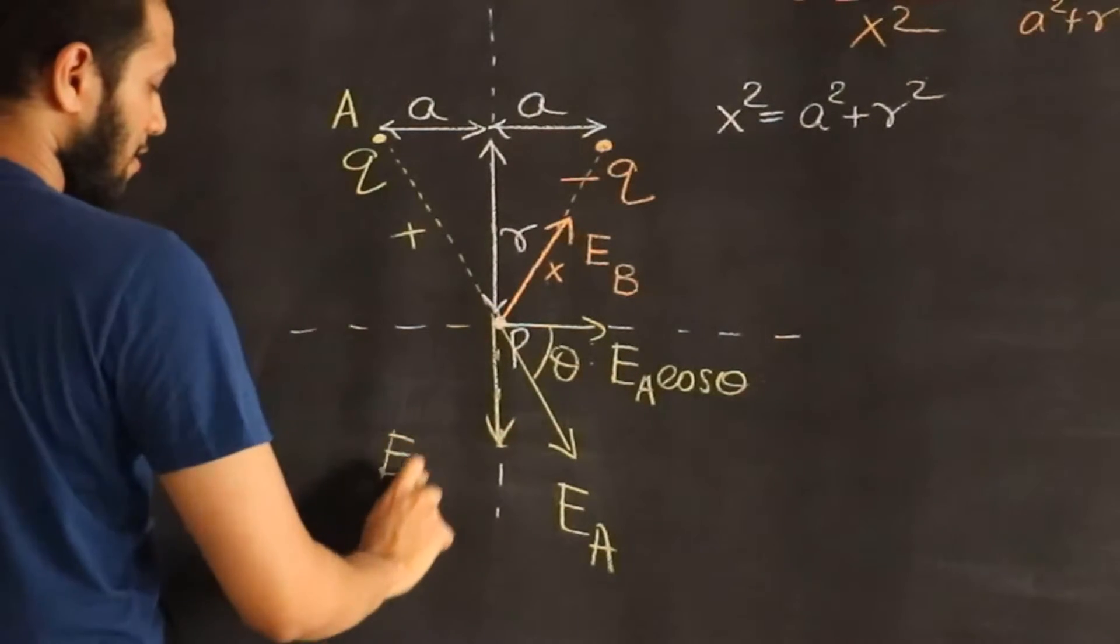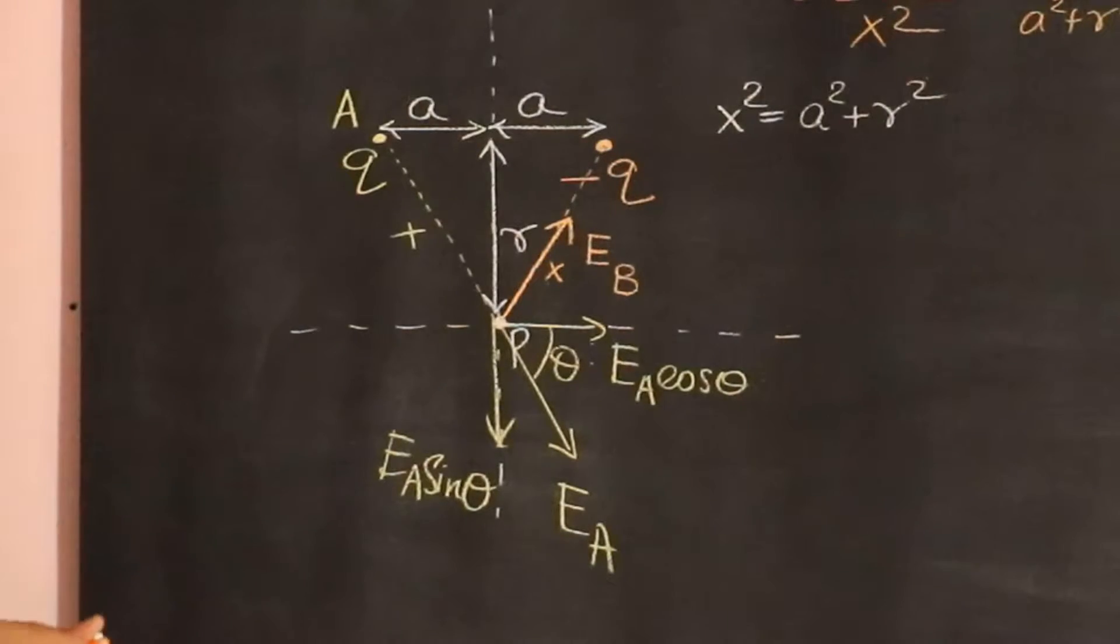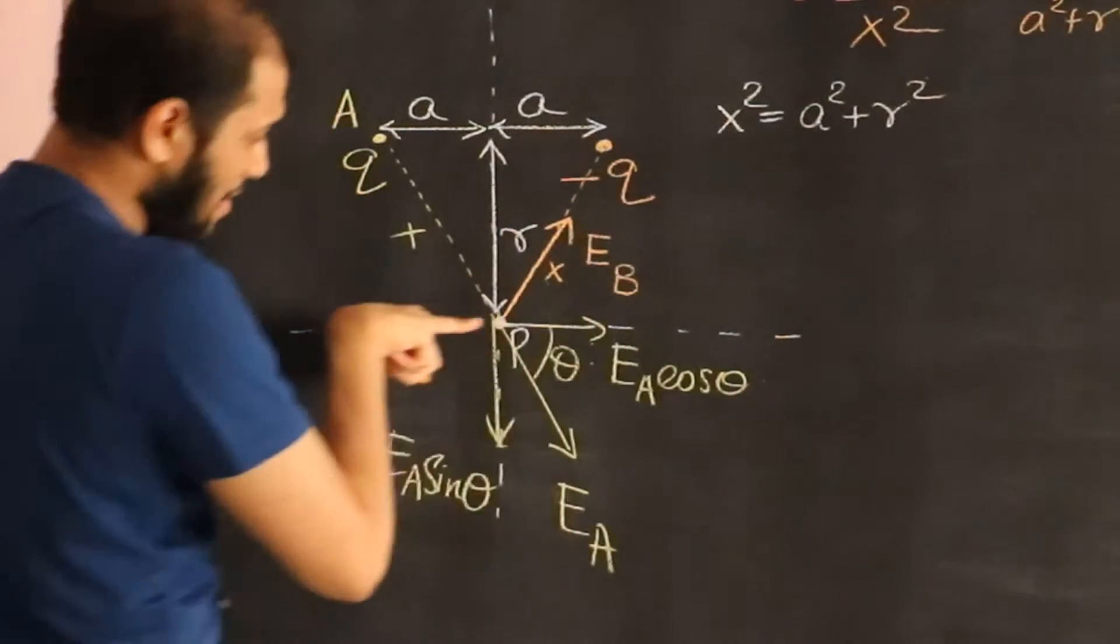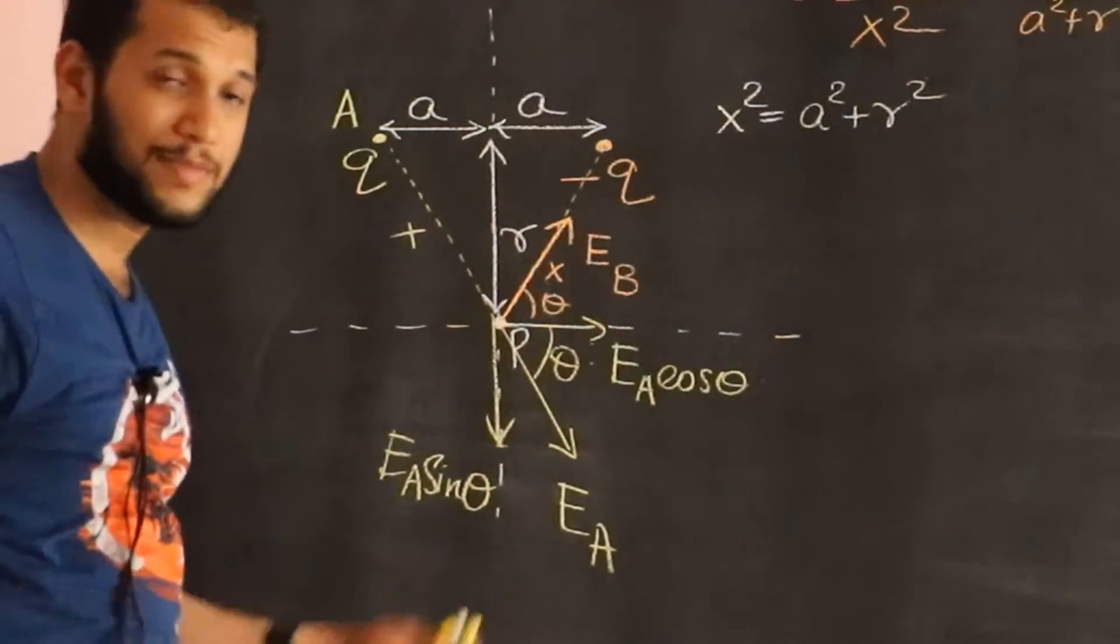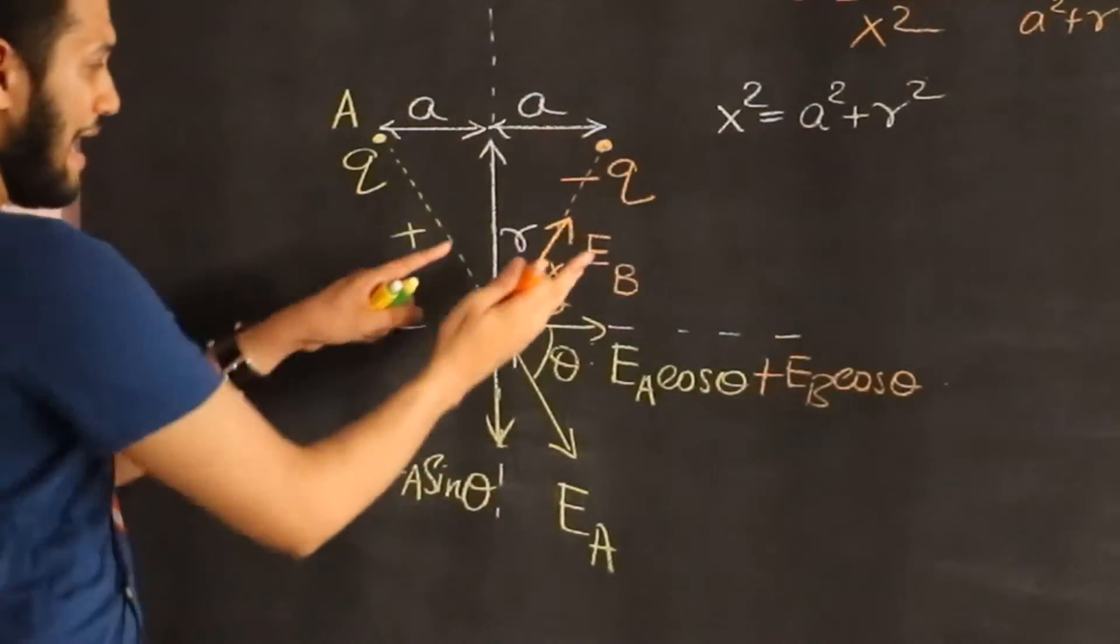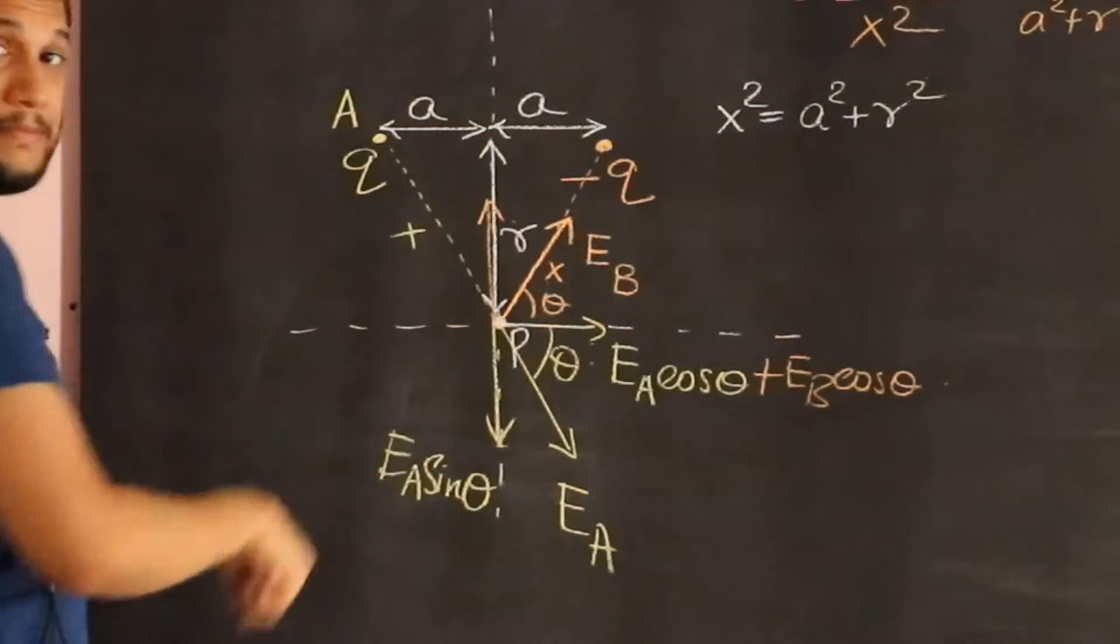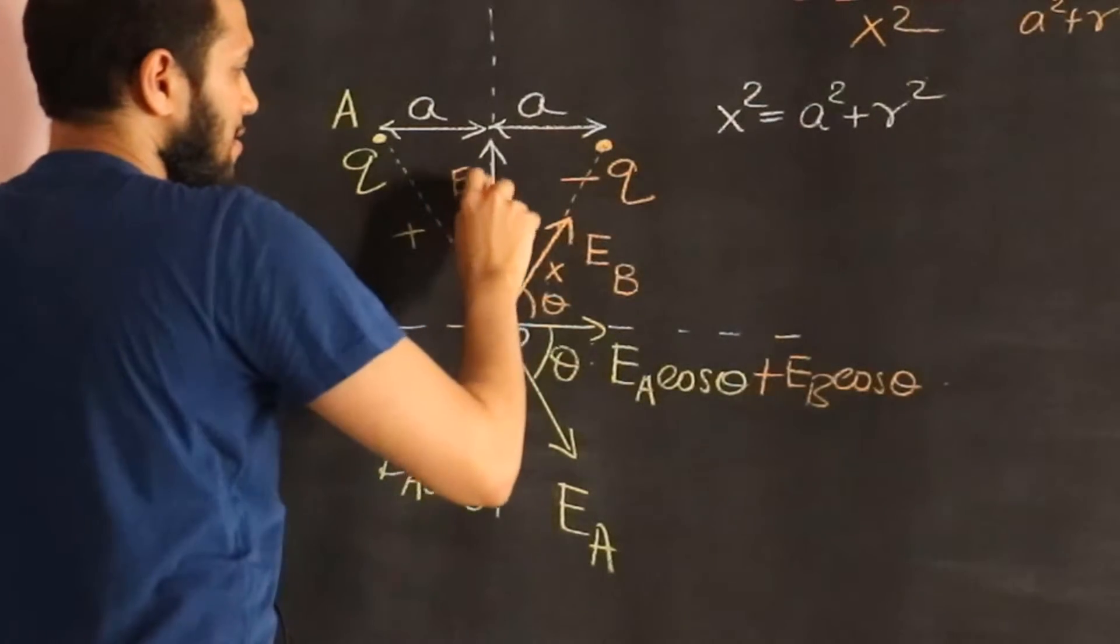Then you can see that electric field EA can be written as one component over here along theta, which is EA cos theta, and another component this way, which is EA sine theta. Similarly, electric field EB can be worked out and you get EB cos theta. Notice this angle is the same due to symmetry, so you get now EB cos theta and one component this side which is going to be EB sine theta.